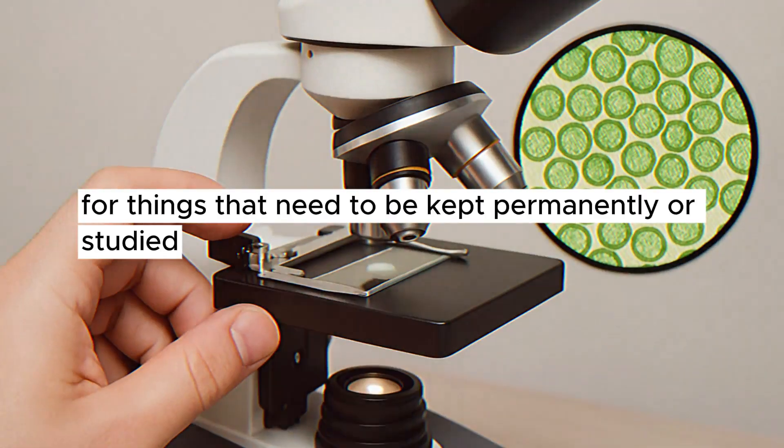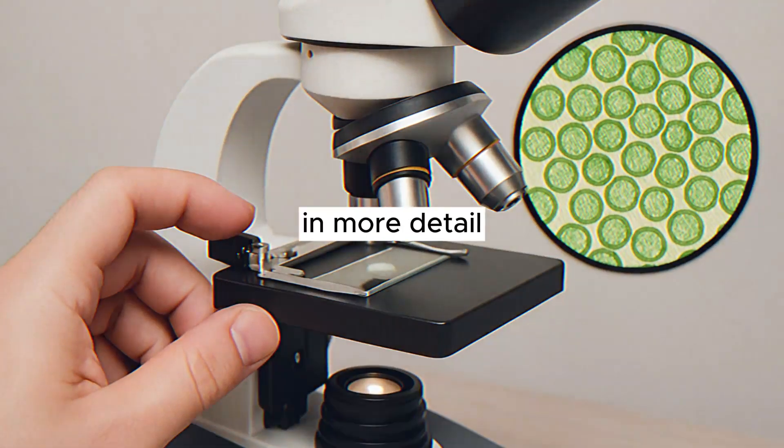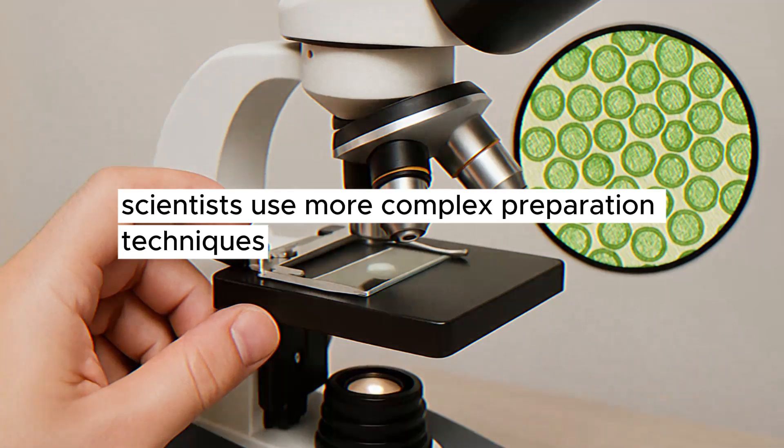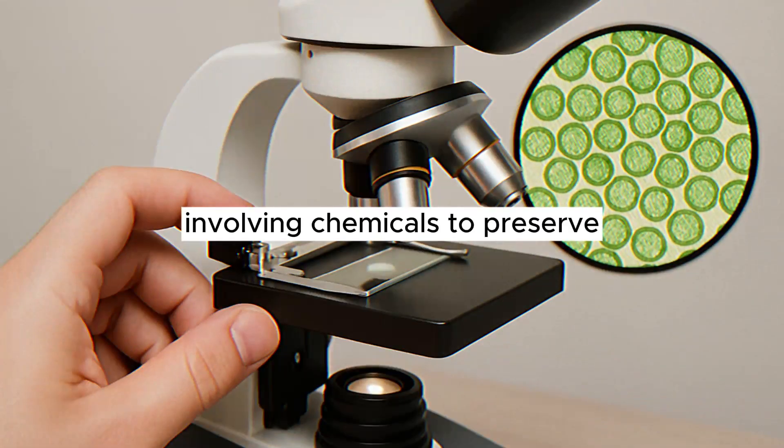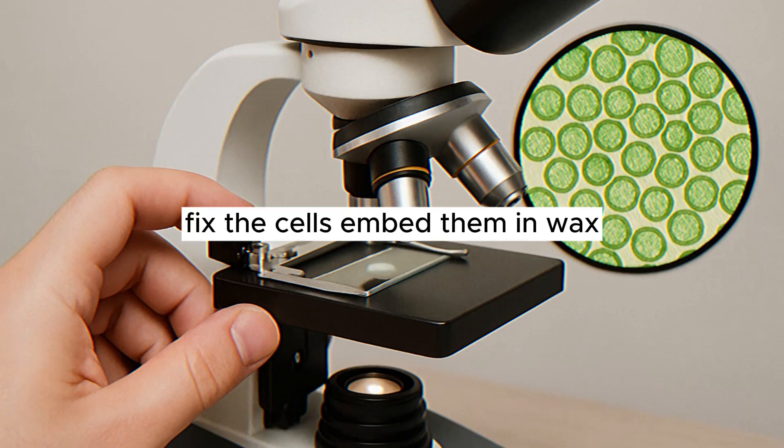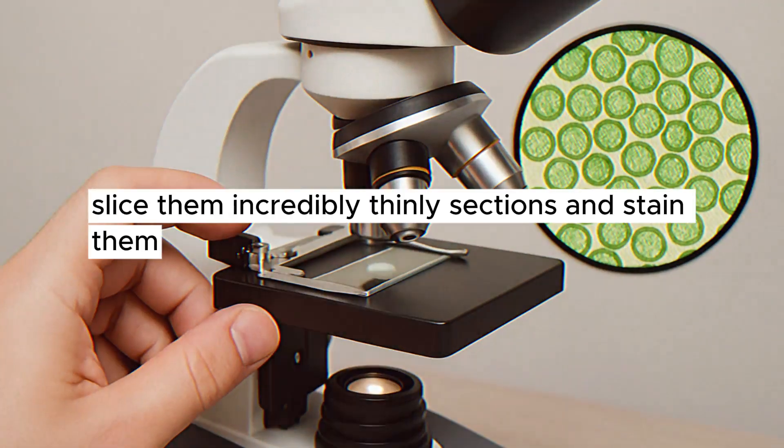For things that need to be kept permanently or studied in more detail, scientists use more complex preparation techniques involving chemicals to preserve, fix, the cells, embed them in wax, slice them incredibly thinly, sections, and stain them.